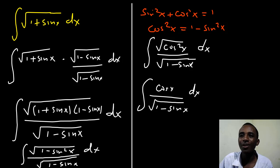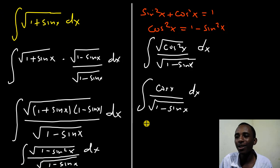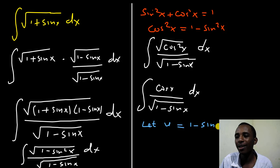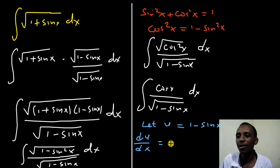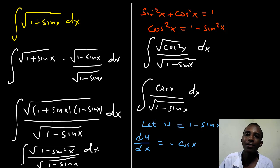Let me go ahead and apply u-substitution. I will let u equal 1 minus sine x, so du/dx is going to be negative cosine x.